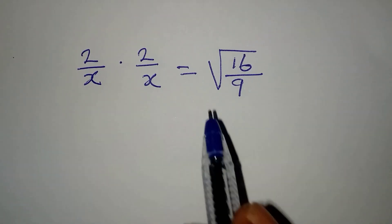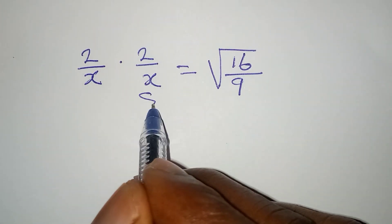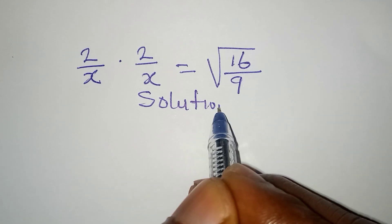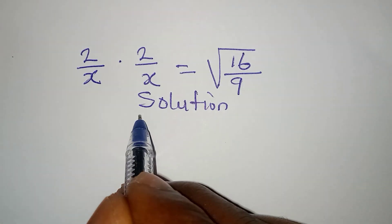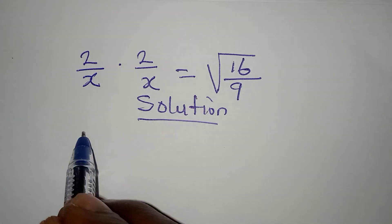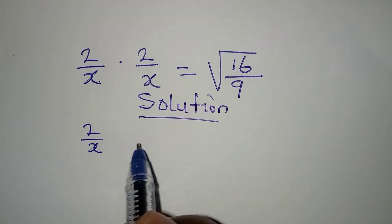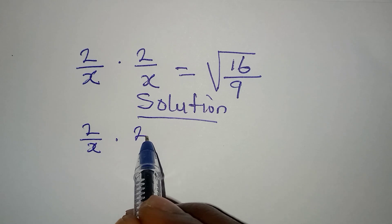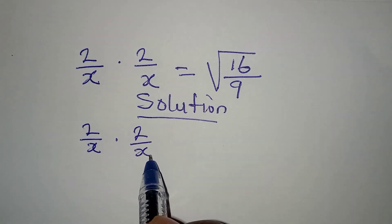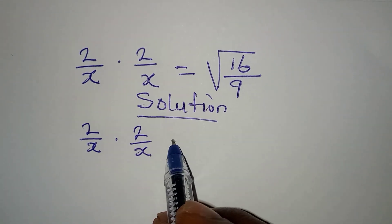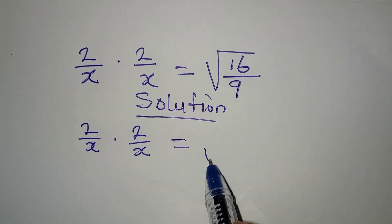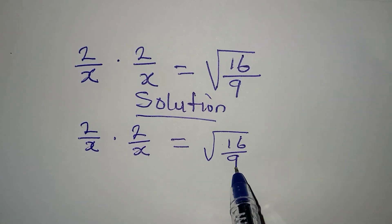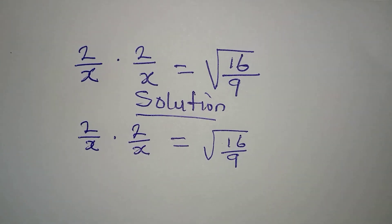Hello everyone, let us provide the solution to this problem. We have 2 over x, multiply by 2 over x, equal to square root of 16 over 9.